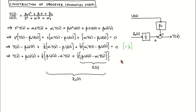Next, we develop the observer canonical form, or second companion form, for the general second order case. We again follow the process of rewriting the transfer function, drawing a block diagram, choosing the states, and writing down the state variable equations. We start by taking the transfer function and multiplying across, which results in this equation. We then move all terms to the left-hand side, gather terms with common factors 1-over-s and 1, then divide by s-squared, resulting in this line.